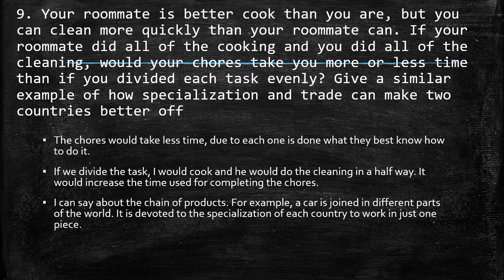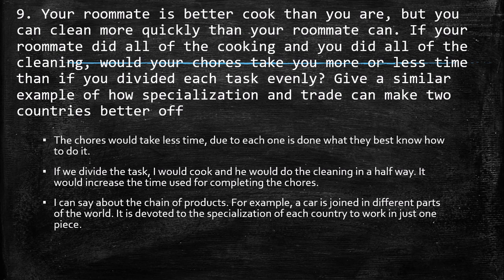When we talk about an example of how specialization and trade can make two countries better off, it came to my mind the case of joining in the production of a car, computer, laptop, or other kinds of machinery. In these cases, the production chain is not only in one country but around the world — the pieces pass around the world because in each country they are specialized exclusively in one part. So it makes specialization make countries better off.